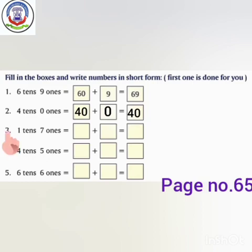Number 3 — how many 10s do we have? We have 1 ten. How many 1s do we have? We have 7 ones. So we put 0 after 1 and it becomes 10. 10 plus 7 equals 17.